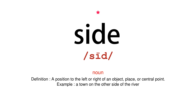Noun. Definition: a position to the left or right of an object, place, or central point. Example: a town on the other side of the river.